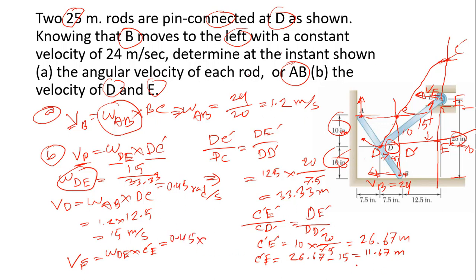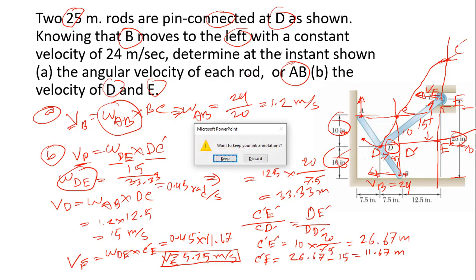The angular velocity we found is 4.5 times the instantaneous center distance from point E, which is 11.67 meters, giving us 6 meters per second at E. This is our desired value. If you have any confusion, write it in the comments. Thank you for watching, please subscribe to my channel.